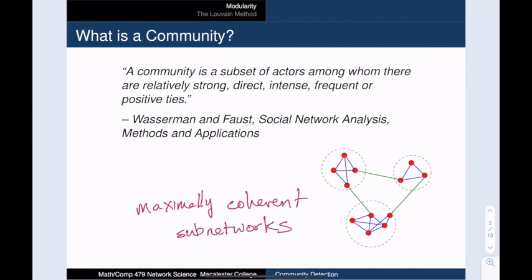So perhaps we want to think about communities as maximally coherent subnetworks. For example, if we were to add a few edges to this network, we may choose to merge two communities into one. But it also might depend upon which edges we add, how many, and where they connect.